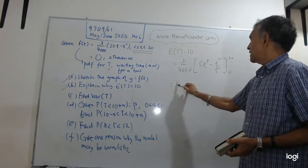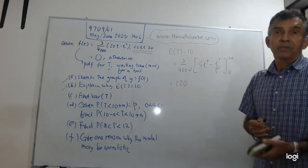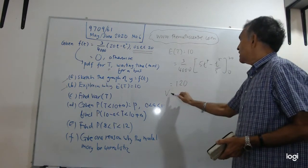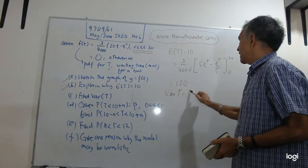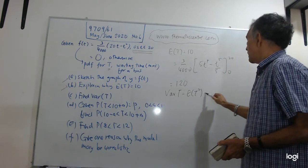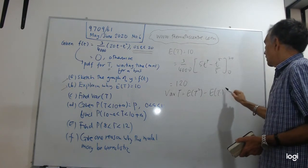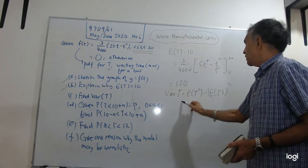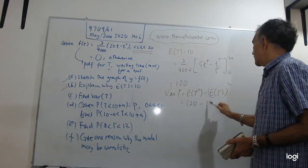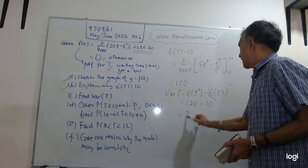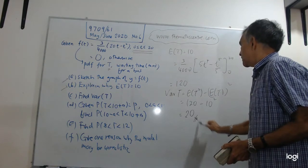So the variance of T, that's the formula again: expected value of T squared minus expected value of T all things squared. And we have 120 minus 10 squared and you will get 20. The variance of T is 20.